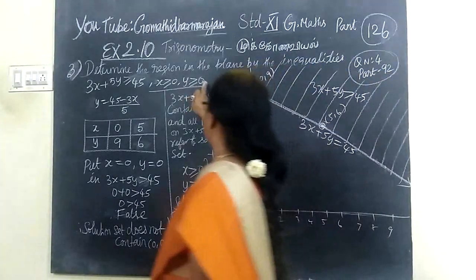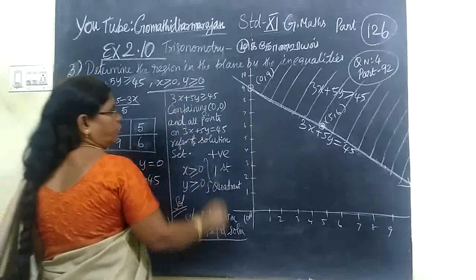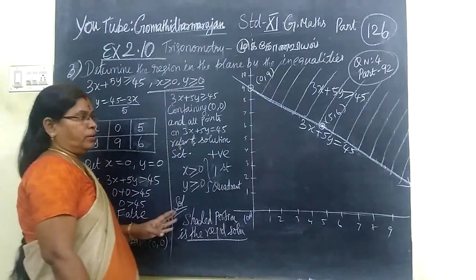Now, in this case, X greater than equal to 0, Y greater than equal to 0. Then, first quarter, this 0, 0 is not there.